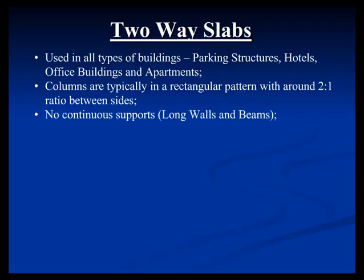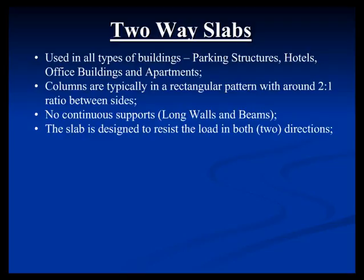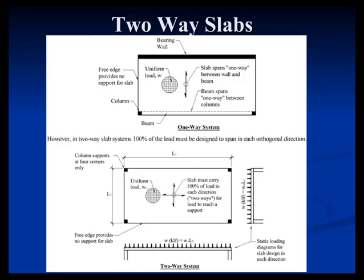The big difference with two-way systems is there are no continuous supports — no long walls or beams like in a one-way system. You have columns in a rectangular uniform pattern, and that's the support for the system. The slab is designed to resist load in both directions, which is why it's called a two-way slab. This is in contrast to a one-way system where the slab is only designed in one direction, with temperature and shrinkage reinforcement in the other. That temperature and shrinkage requirement — the 0.0018 — does not apply to a two-way slab, since you have strength reinforcement in both directions.